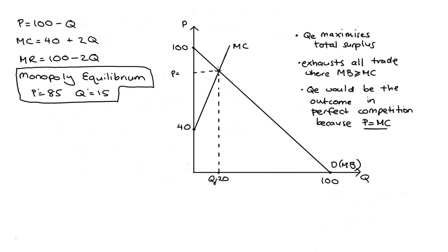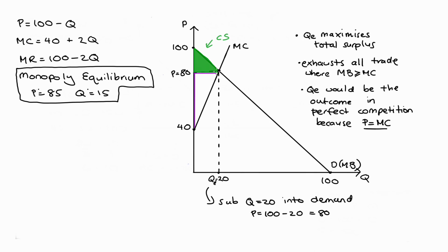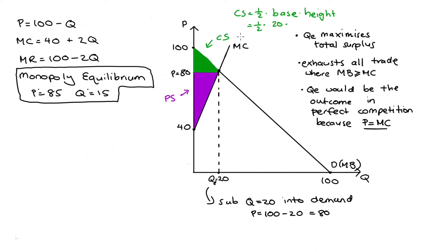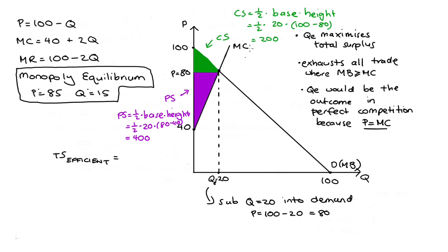Substituting Q equals 20 into the inverse demand curve gives P equals 100 minus 20, so 80. Under perfect competition with price equal to marginal cost, the market produces 20 units at a price of 80. Consumer surplus would be a triangle with base 20 and height 20 (100 minus 80), giving 200. Producer surplus would be a triangle with base 20 and height 40 (80 minus 40), giving 400. Total surplus under perfect competition is 200 plus 400, equal to 600.